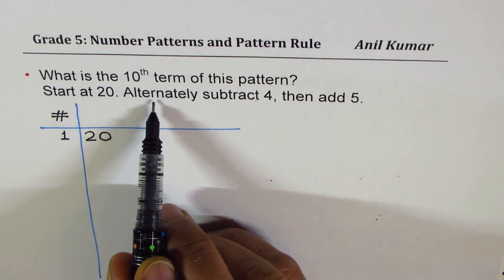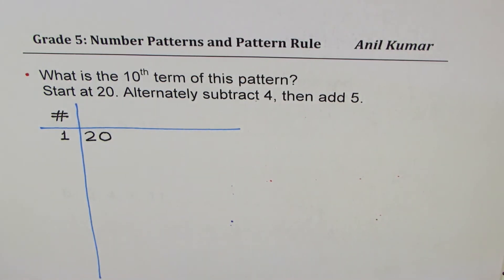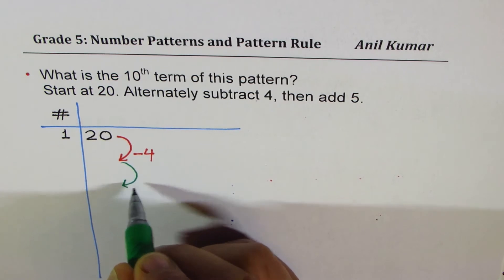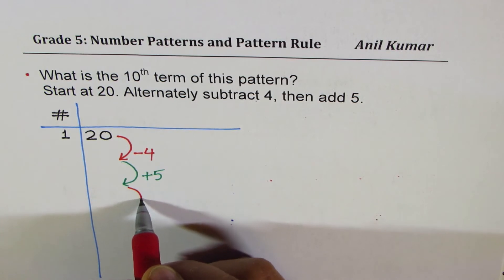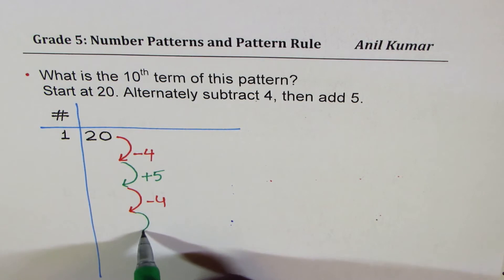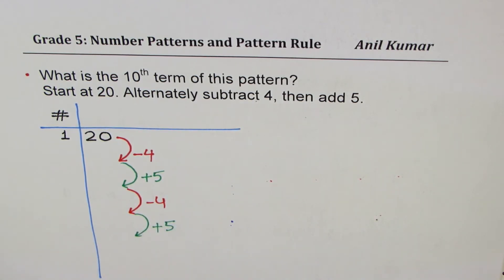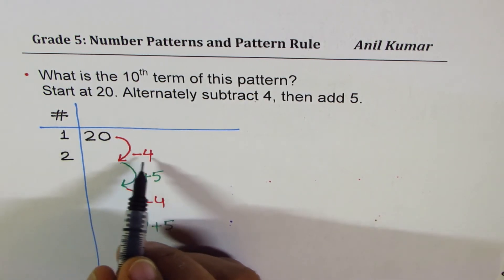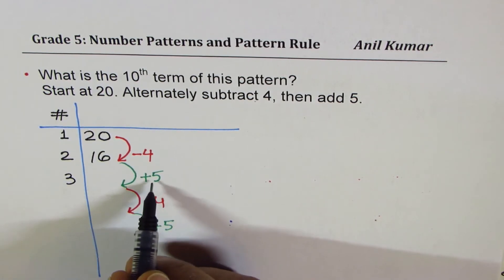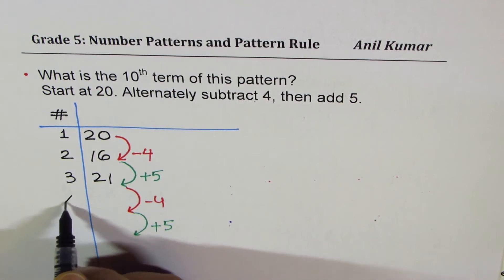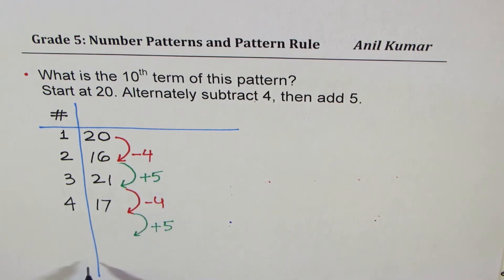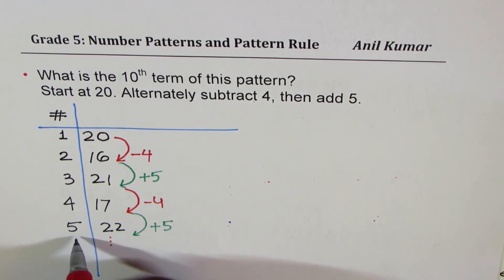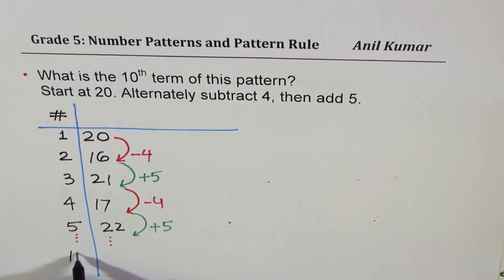Alternately subtract four means we take away four, then add five, then subtract four, then add five — keep doing it like that. So the second term: 20 take away four is 16. Third term: add five gives 21. Fourth: take away four from 21 gives 17. Fifth term: add five to get 22. Now figure out the pattern and find what the 10th term will be.